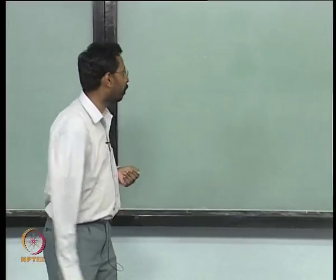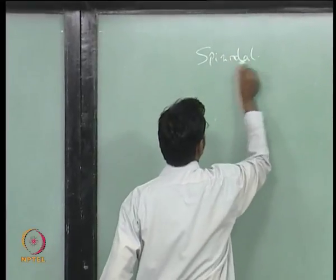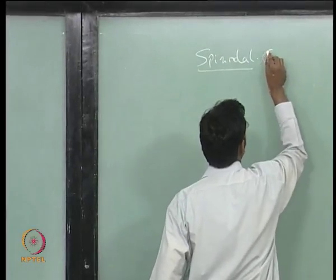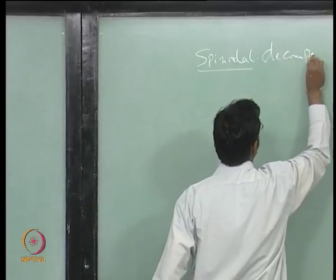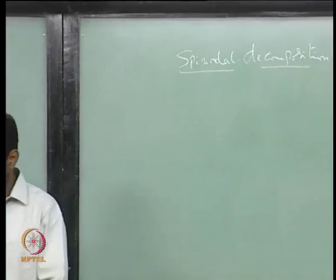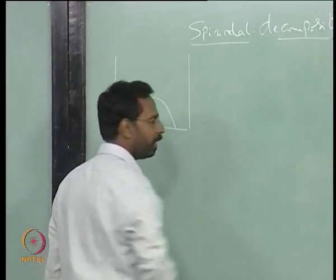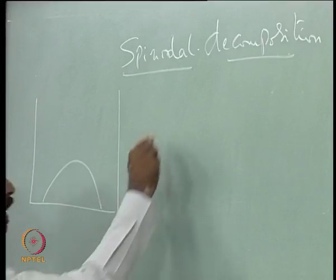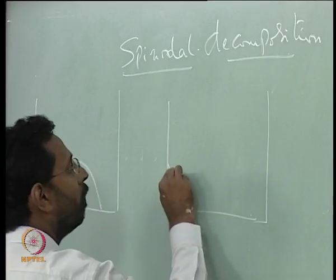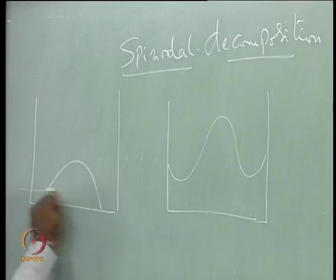Last class we started talking about spinodal decomposition, and we will continue there. We said that you will see spinodal decomposition whenever you have a miscibility gap in the phase diagram. If there is a miscibility gap in a phase diagram, it will be reflected in the free energy composition diagram at any given temperature within that.